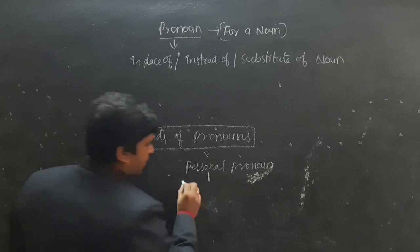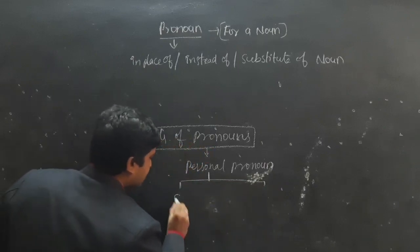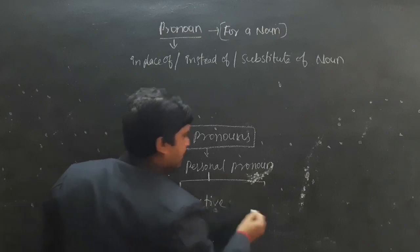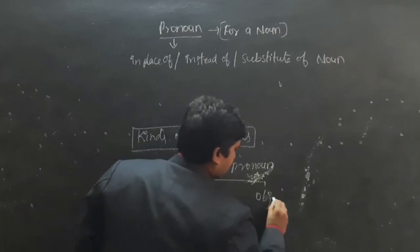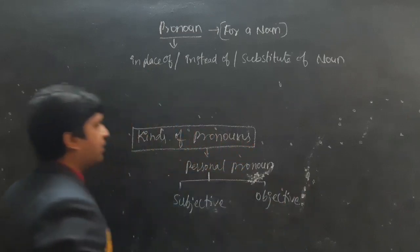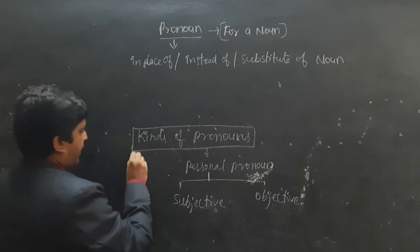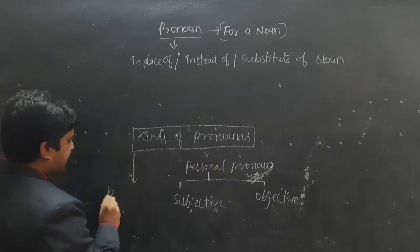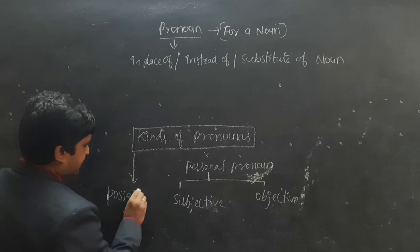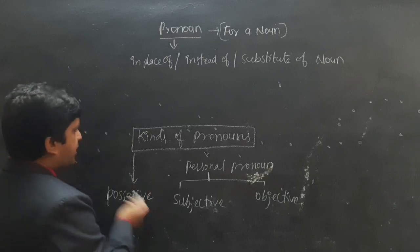Personal Pronouns are divided into two ways: one is Subjective and the second one is Objective. Then after Personal Pronouns, we have another kind called Possessive Pronoun, which explains the ownership.